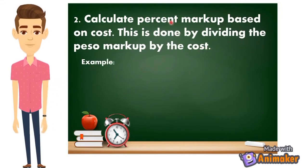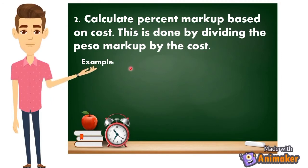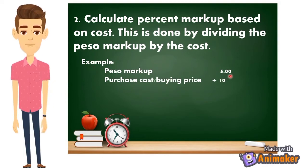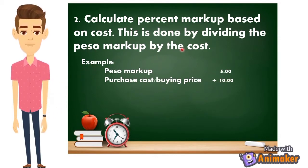Step A2: calculate percent markup based on cost. This is done by dividing the peso markup by the cost. We have a peso markup of 5 pesos from step one, and based on the given, a purchase cost or buying price of 10 pesos. All we have to do is divide the peso markup by the cost: 5 divided by 10 equals 0.5, or 50 percent markup.